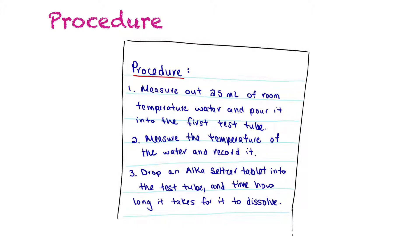Your procedure is the step-by-step instructions for doing your experiment. Again, you want to be as specific as possible so that somebody else could read it, follow it perfectly, and get the same results. There are a couple of ways to do this — you can write it in paragraph form, but the preferred way is a numbered list: step one do this, step two do that.